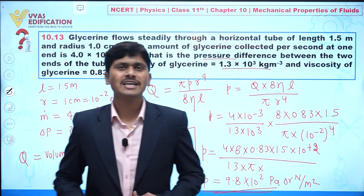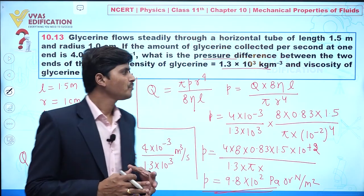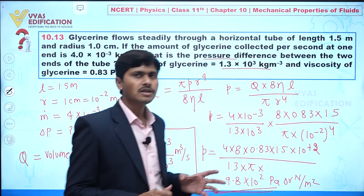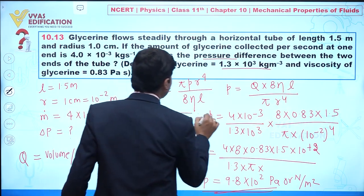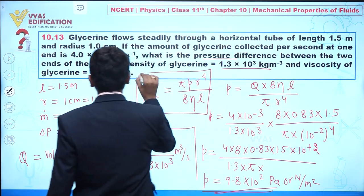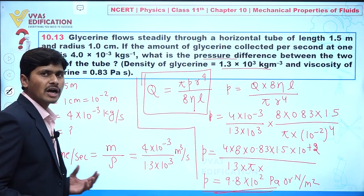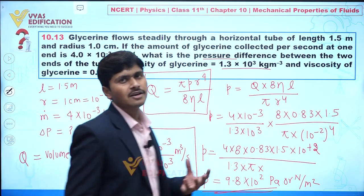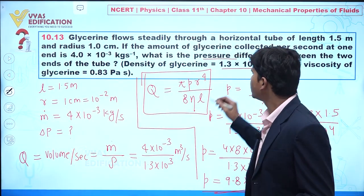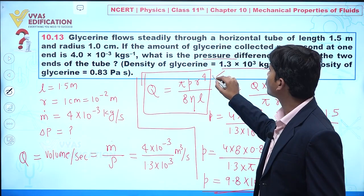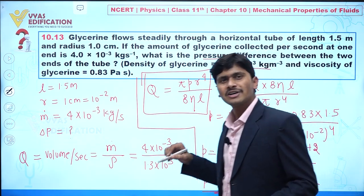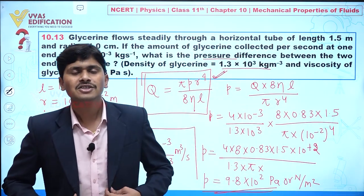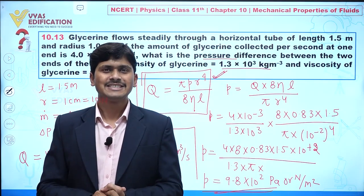After simplifying, the pressure difference comes out to be 9.8 into 10 to the power 2 Pascal, or Newton per meter square. The important takeaway is to remember Poiseuille's formula, first calculate the volume flow rate from the mass flow rate, and then substitute all the values into the formula to find the pressure difference.